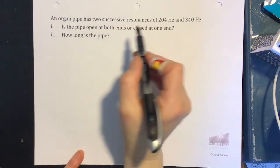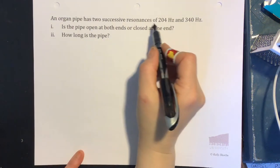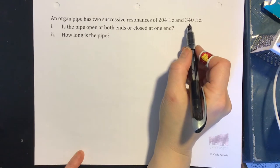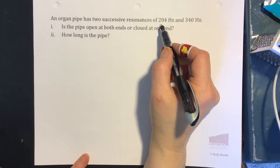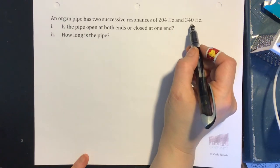An organ pipe has two successive resonances of 204 and 340 hertz. This means if one resonance happens at 204, the very next one is 340. There's not another one in the middle.